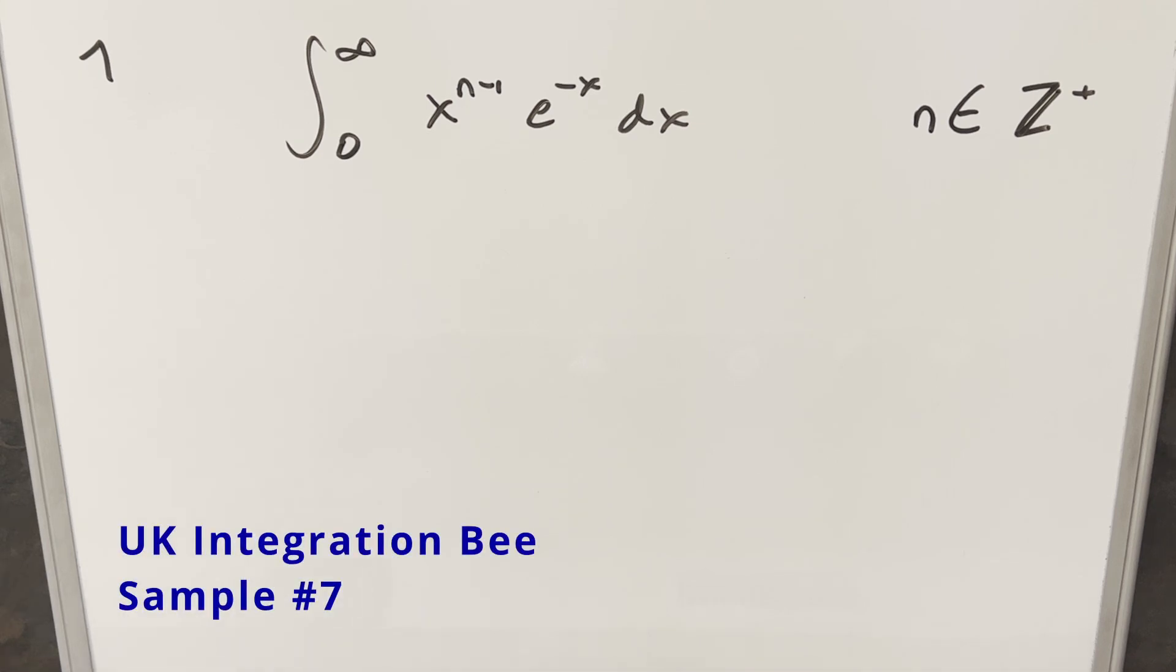Okay, we have a return of the integral from the UK integration B, sample number 7. We have the integral from 0 to infinity of x to the n minus 1 times e to the minus x dx.